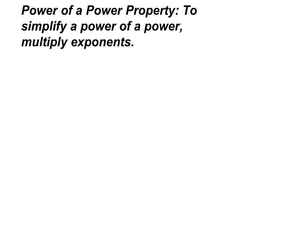Power of a power property. To simplify a power of a power, you multiply the exponents. So it would look like this: if you had 6 to the 4th power, but it was to the 4th power as well, you simply multiply your exponents, so you would have 6 to the 16th power.